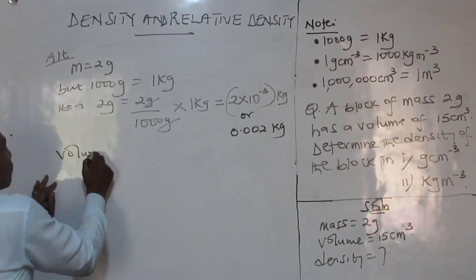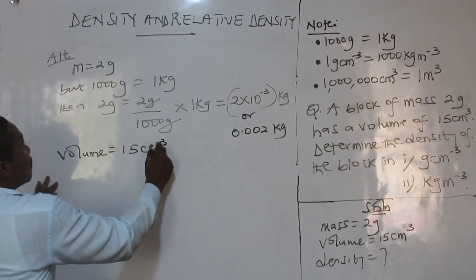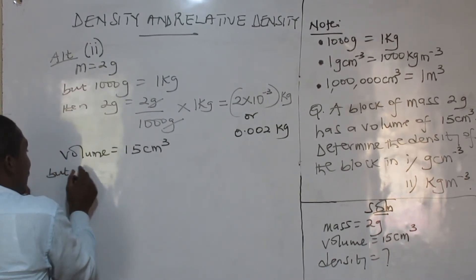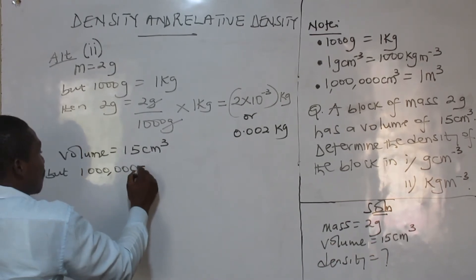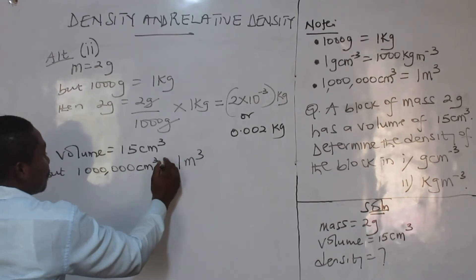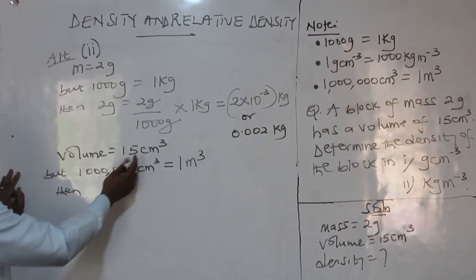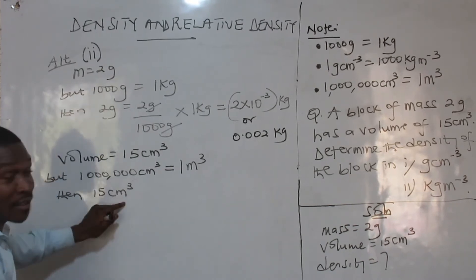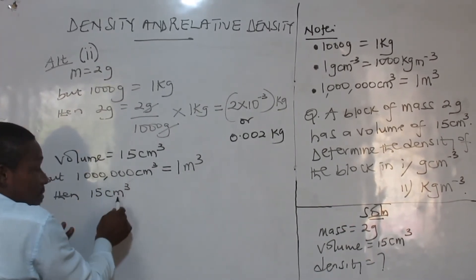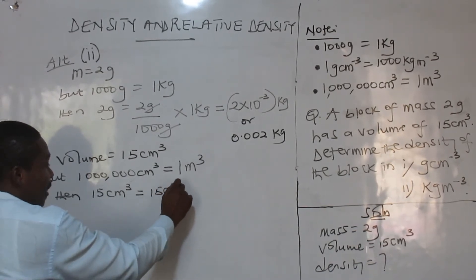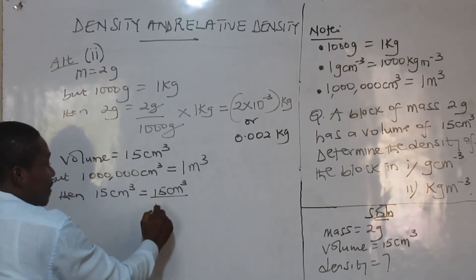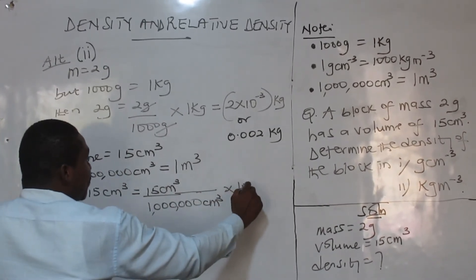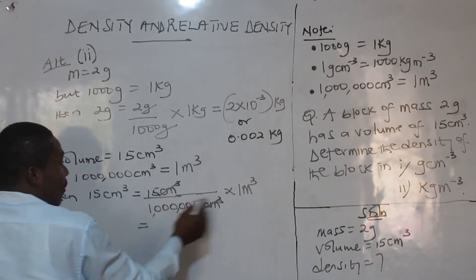Now let's look at the volume. The volume happens to be 15 centimeter³. We know that 1 million centimeter³ equals 1 meter³. Then what will 15 cm³ give me? Before you do the conversion, make sure the units are the same on the left side. Because cm³ must match cm³ on both sides. Then 15 gives me 1.5 times 10 to the power of minus 5 meter³, which is the same as 0.000015 meter³.